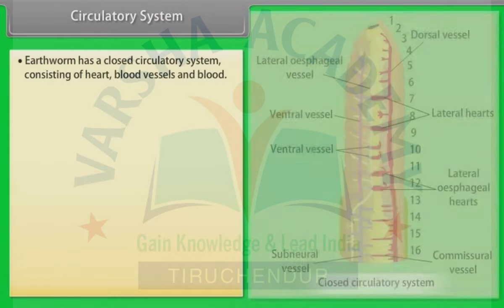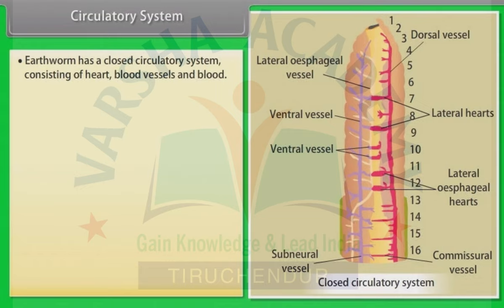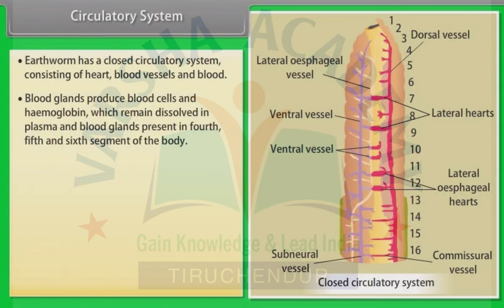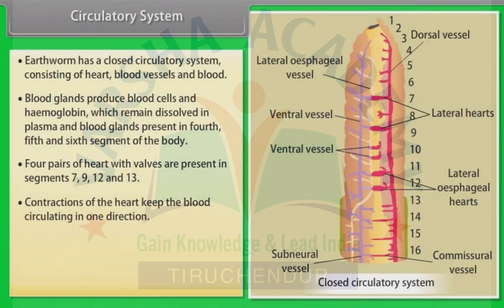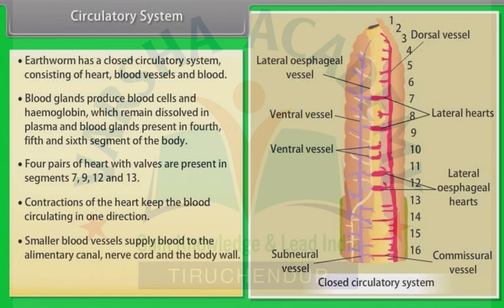Circulatory system: Earthworm has a closed circulatory system consisting of heart, blood vessels and blood. Blood glands produce blood cells and hemoglobin, which remain dissolved in plasma. Blood glands are present in the fourth, fifth and sixth segments. Four pairs of hearts with valves are present in segments seven, nine, twelve and thirteen. Contractions of the heart keep blood circulating in one direction. Blood cells are phagocytic in nature.